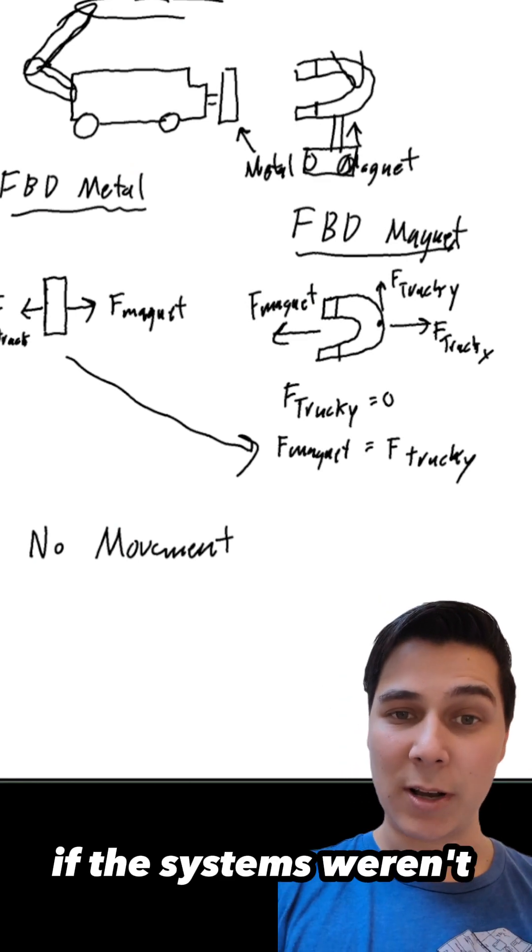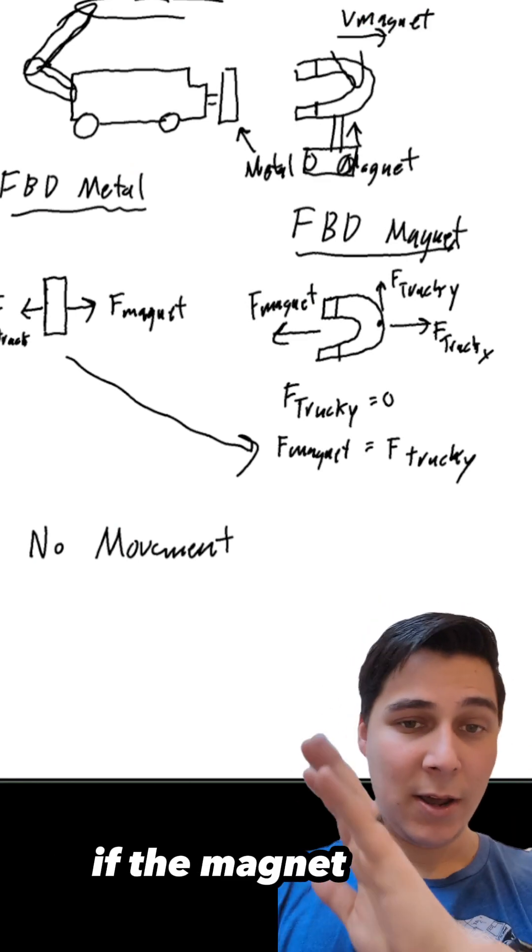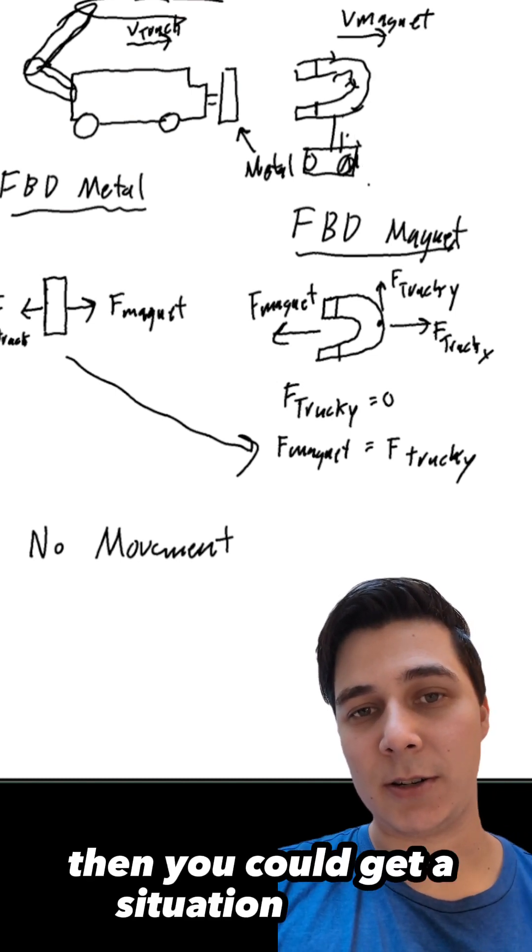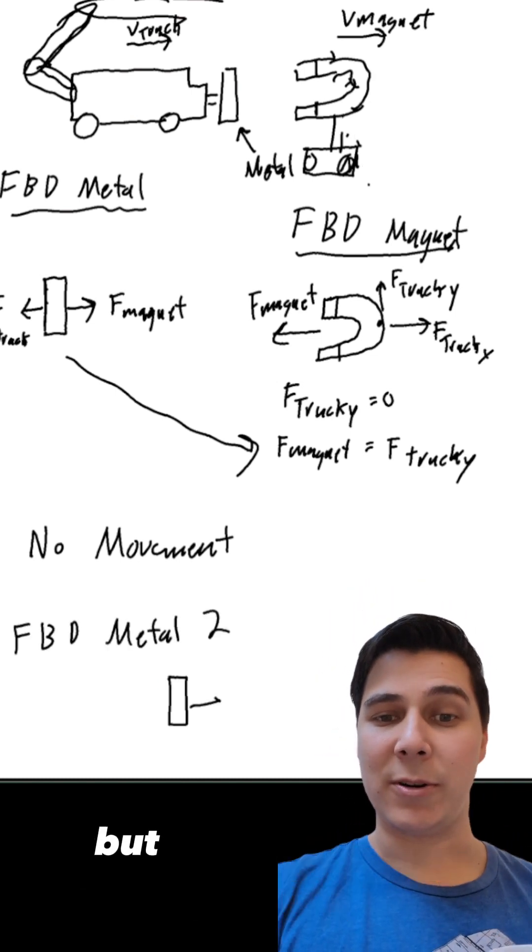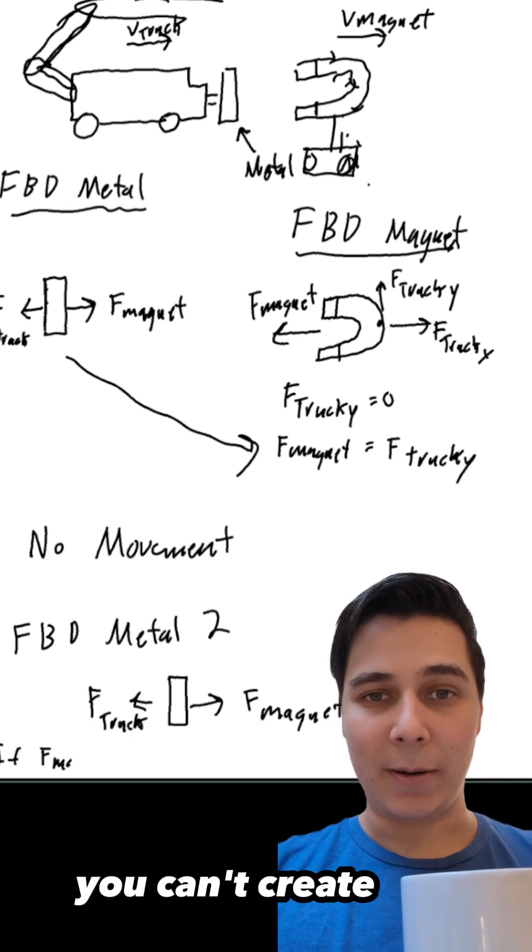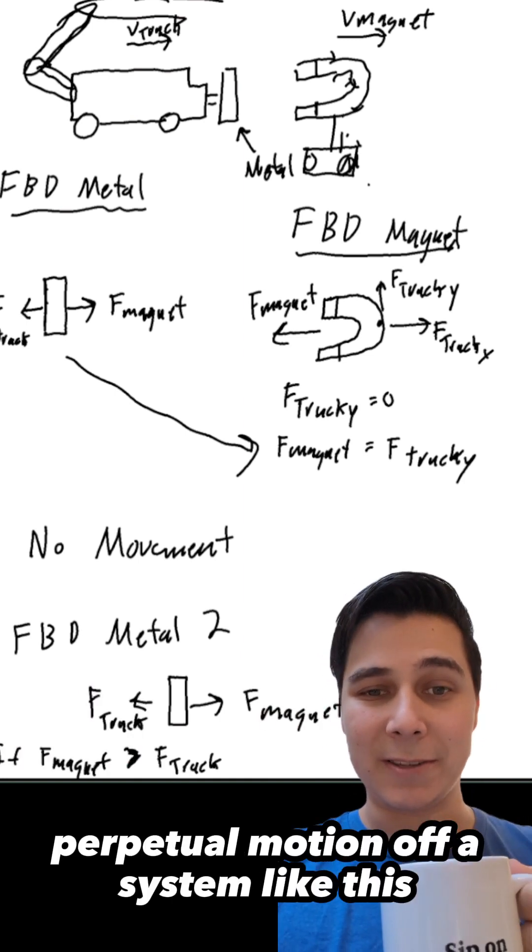Now, if the systems weren't coupled, for instance, if the magnet was rooted to the ground and then the wheels were allowed to rotate, then you could get a situation where you can pull the car forward, but you'd have to always be moving the magnet, which means you can't create perpetual motion off a system like this. But anyway...